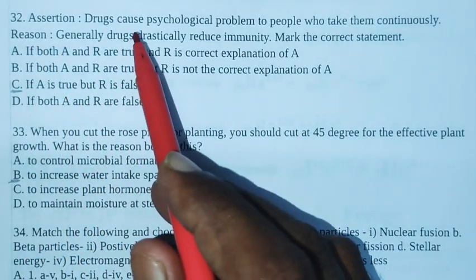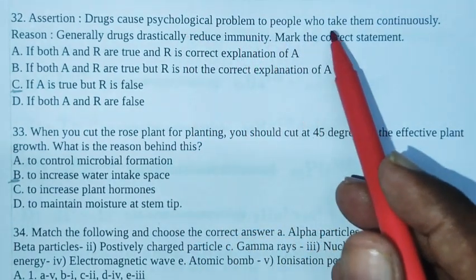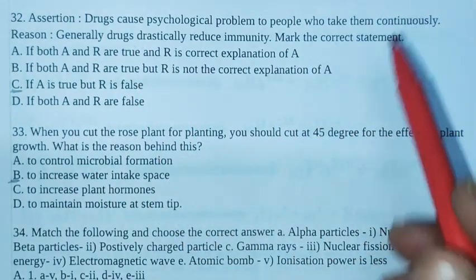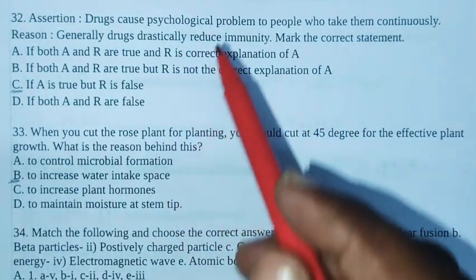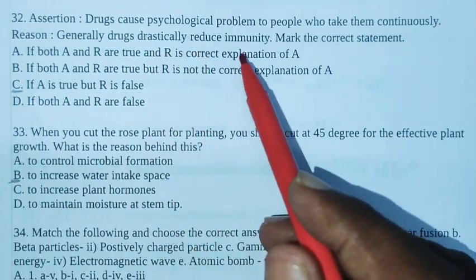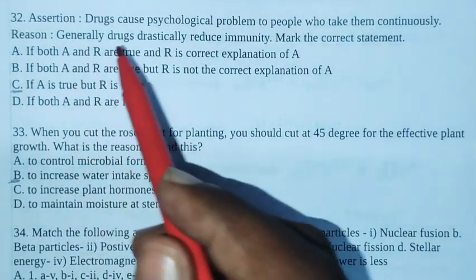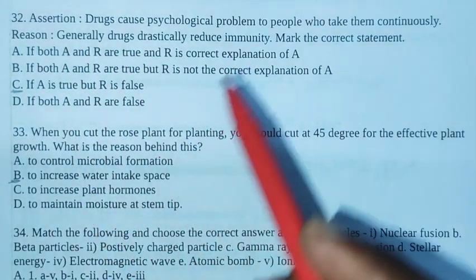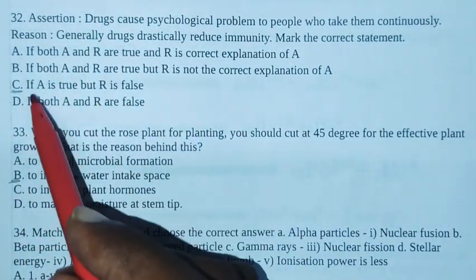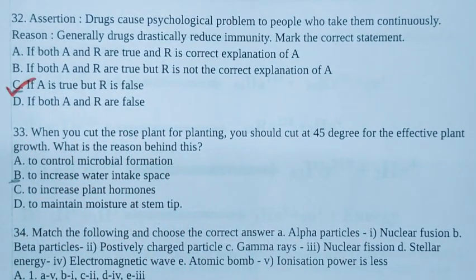32. Assertion: Drugs cause psychological problems to people who take them continuously. Reason: Generally drugs drastically reduce immunity. Mark the correct statement. Generally drugs do reduce immunity. So option C is the right answer. Assertion is true but reason is false. Option C is the right answer.